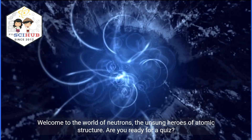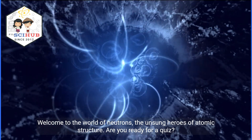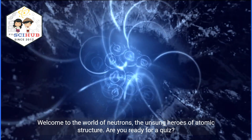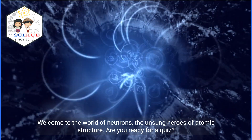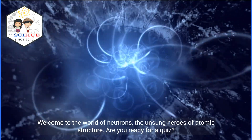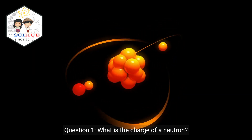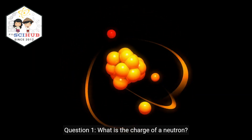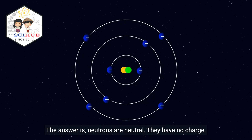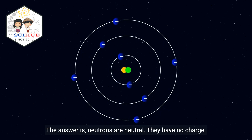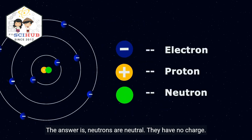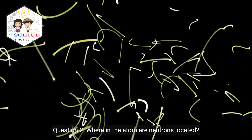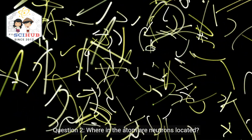Welcome to the world of neutrons, the unsung heroes of atomic structure. Are you ready for a quiz? Question 1: What is the charge of a neutron? The answer is: neutrons are neutral — they have no charge.